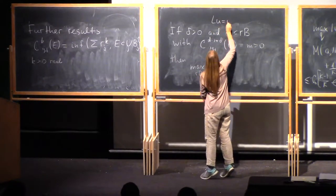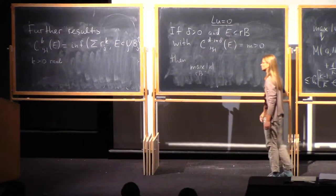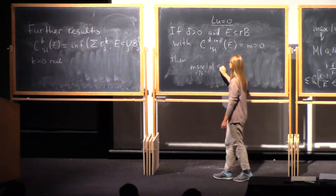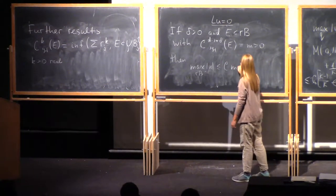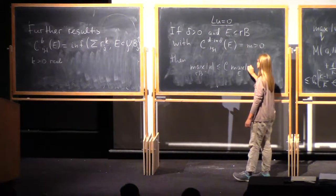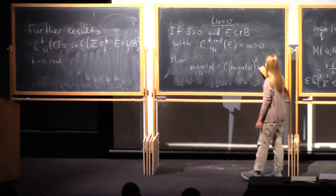So, u is solution of elliptic equation as always with controlled coefficients. Then there are constants here such that this is true.